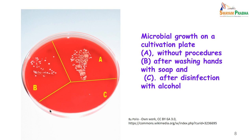This is a blood agar plate on which impressions of the fingertips have been taken. A represents the hand without any procedure; B is after washing hands with soap and water; and C is after disinfection with alcohol. As you can see, A shows the maximum number of colonies, washing hands with soap and water if not done properly will also show colonies, and after disinfection with alcohol you usually do not see any colonies.